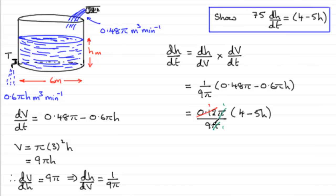So if you do that, you get 75 there. And can you see that if I now multiply both sides by 75, I end up with therefore 75 times dh/dt equals the 4 minus 5h. So that is what we had to show. I hope that's given you some idea then how to go about this particular problem. Typical kind of question on connected rates of change.